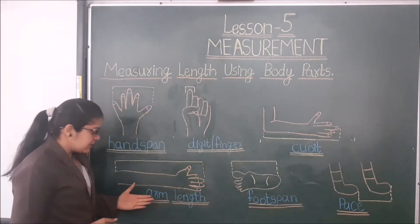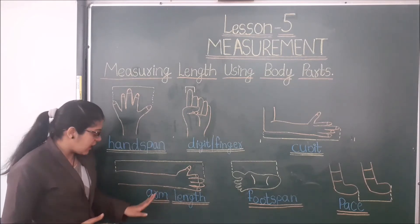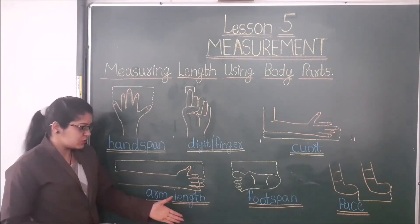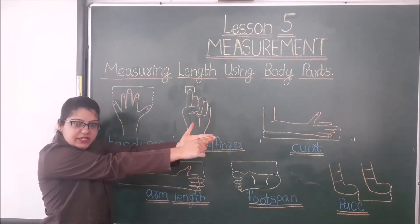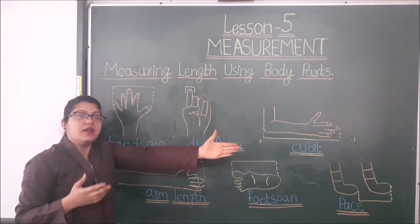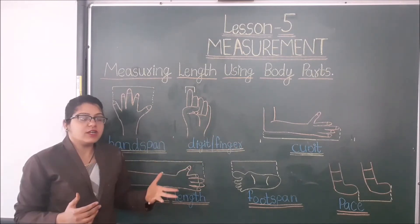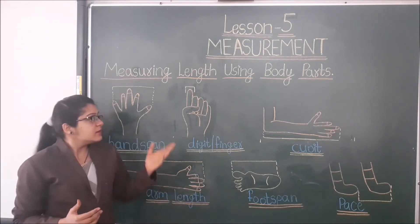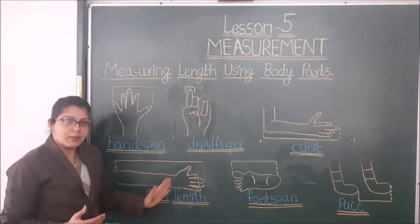Next, students, we can measure the length of anything with the help of arm length. Arm length is from our shoulder to the middle finger. We can measure anything with the help of our arm length — like a table, desk, or blackboard.